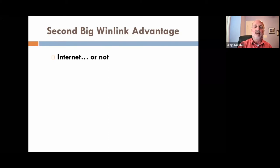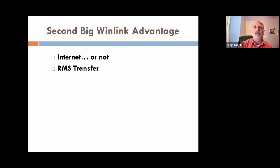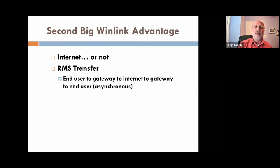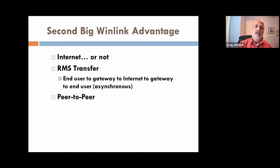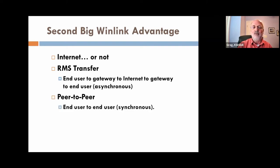The second big WinLink advantage is the flexible use of the Internet. An RMS (Radio Message Server) is another term for a gateway. When you send a WinLink message through a gateway, it goes from you to the gateway, to the Internet, to the gateway the end user selects — that's the asynchronous communication described earlier. If instead you send a peer-to-peer message, it goes directly end user to end user — that's synchronous communication with no Internet involved.